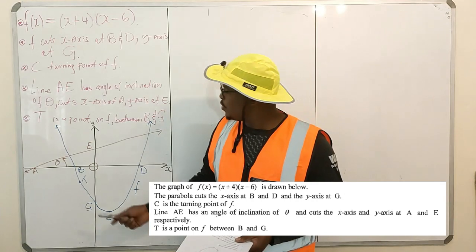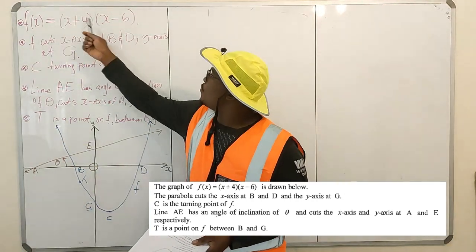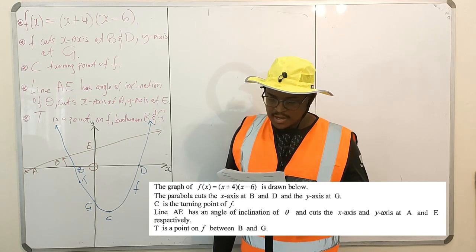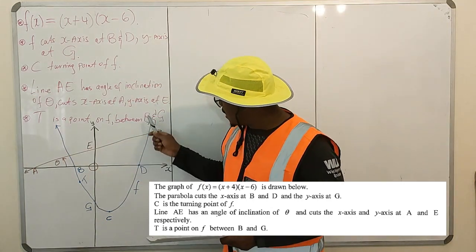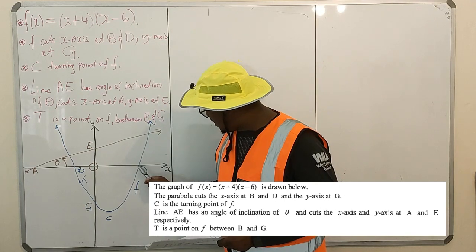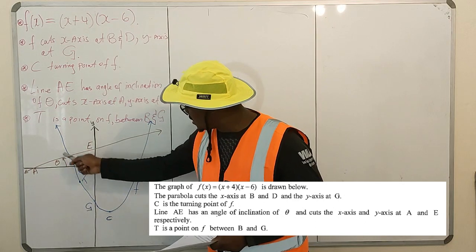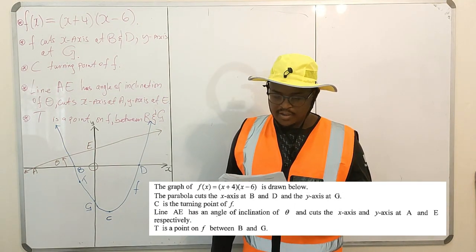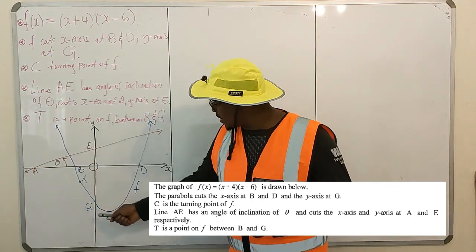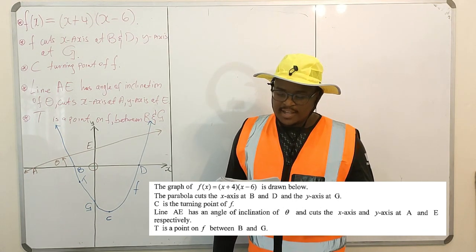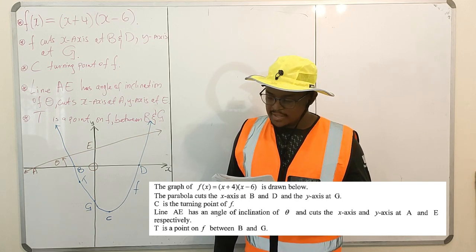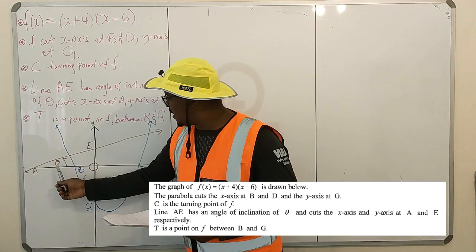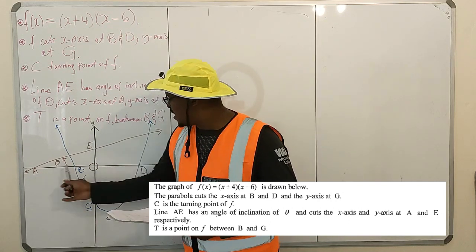The graph of f is drawn below. The parabola cuts the x-axis at B and D and the y-axis at G. The parabola cuts the x-axis at B and at D, and the y-axis at G. C is the turning point of f. Line AE has an angle of inclination of theta and cuts the x-axis and y-axis at A and E respectively.